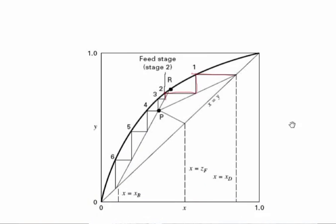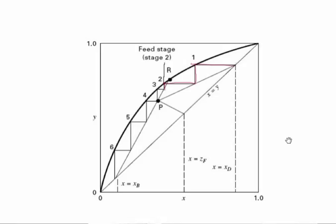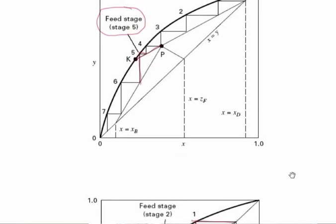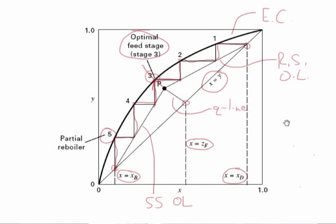This tells us that the optimal feed stage location occurs if we locate the feed stage right at the Q line. In order to find the optimal feed stage location, you simply find point P — the intersection of the two operating lines and the Q line. This is a point you've already found because you need it to construct the stripping section operating line. You perform your transition between operating lines, your feed stage, at this location. So as you're crossing the Q line, either horizontally or vertically, you go to a different operating line than the one you started that step on. That's the optimal feed stage location in all cases.